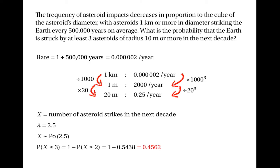So roughly speaking, there's a probability of about 0.46 that the Earth will be struck by at least three asteroids of radius 10 metres or more in the next decade.